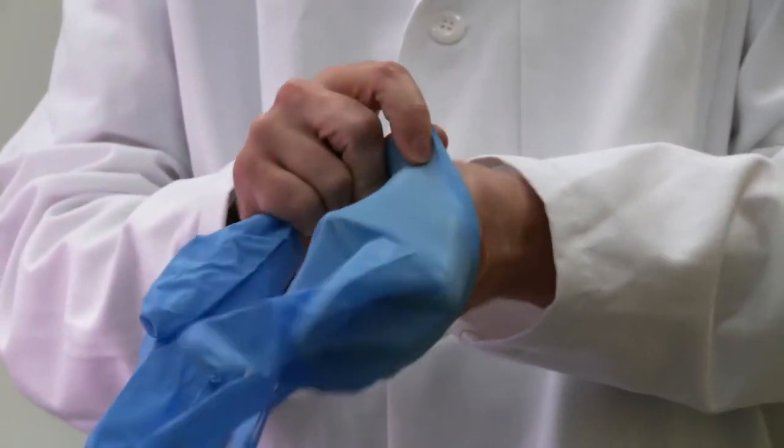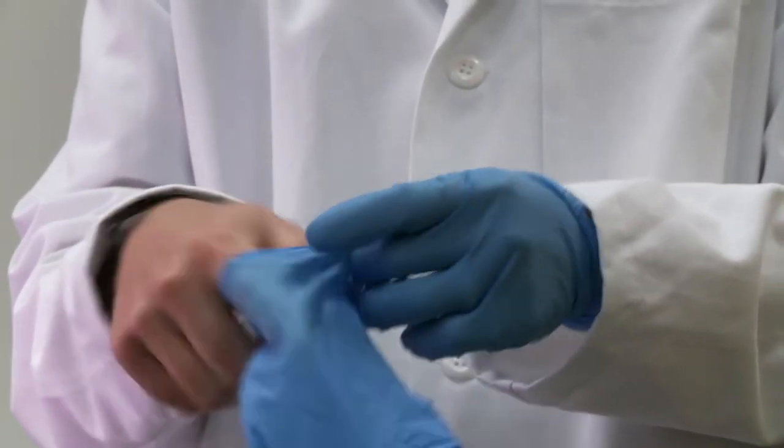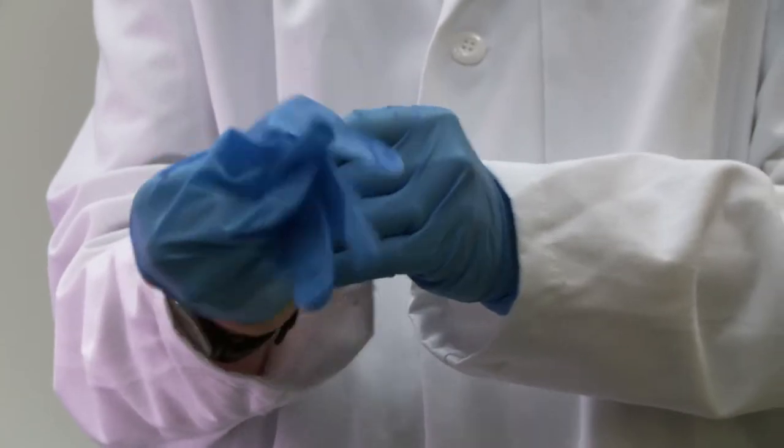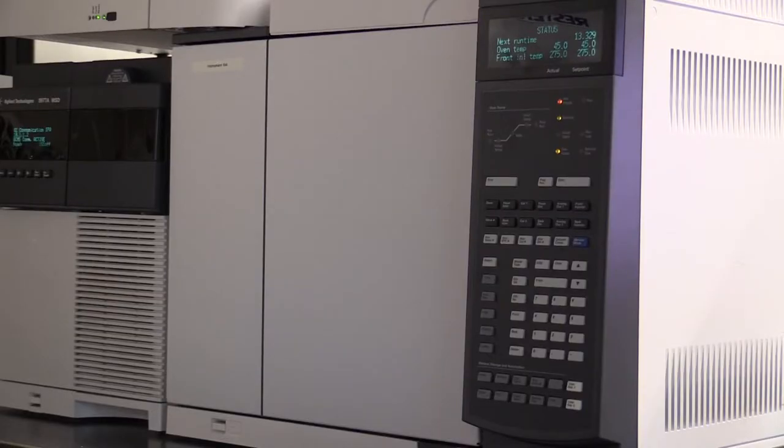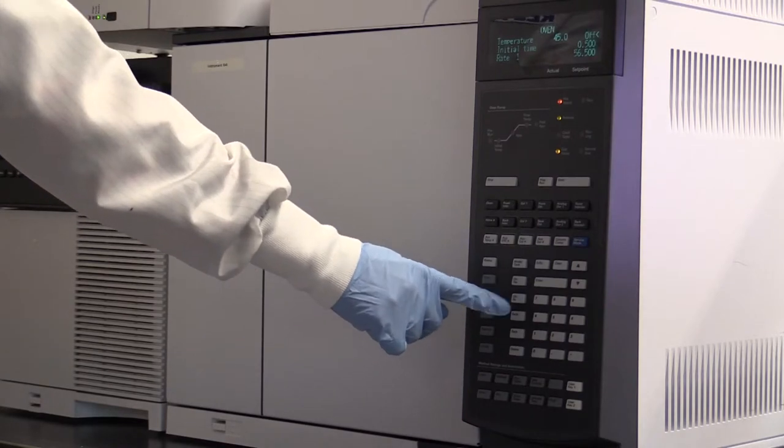Restek recommends wearing protective gloves when handling the GC accelerator kit components. To install the GC accelerator, turn off the heated zones in the oven, inlets, detectors, and MS transfer line and wait for them to cool.